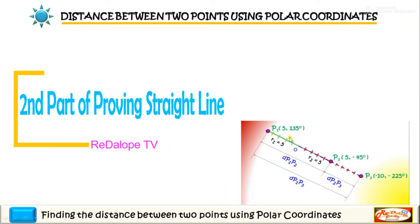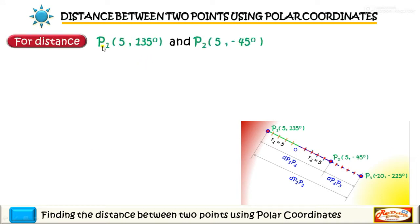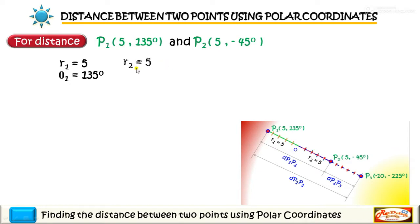For distance P1 P2, we have the given coordinates. For point 1 we have R1 equal to 5 and theta 1 equal to 135, and for point 2, R2 is equal to 5 and theta 2 is equal to negative 45.